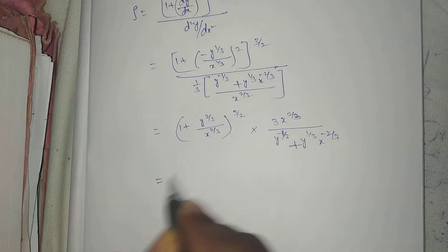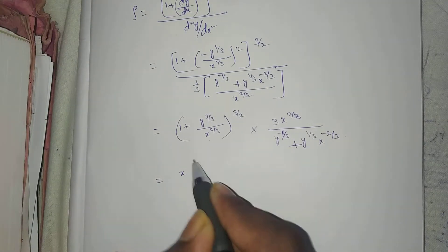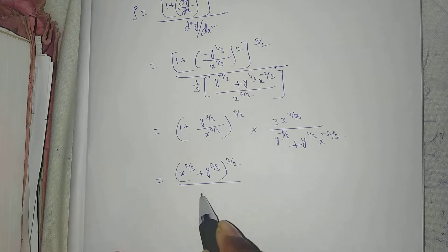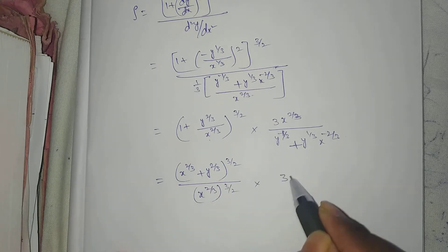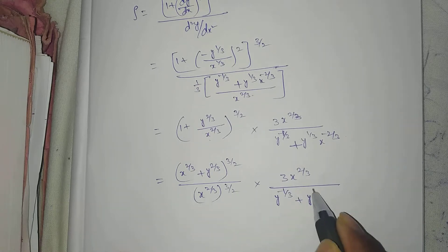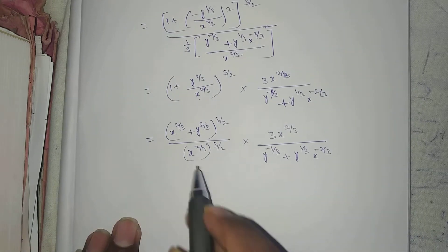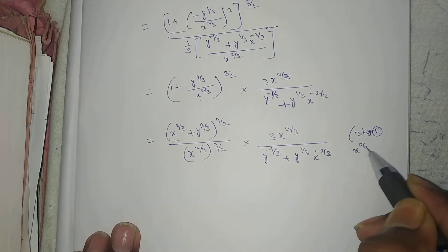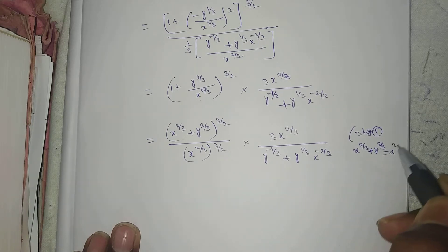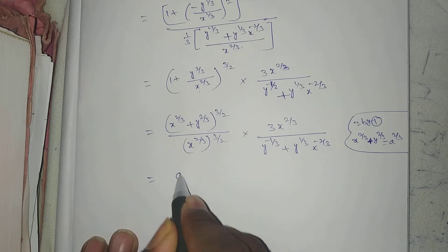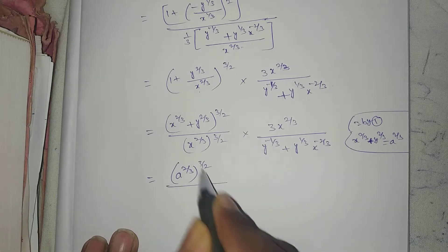Taking LCM in the numerator: [(x^(2/3) + y^(2/3)) / x^(2/3)]^(3/2). Using equation 1, x^(2/3) + y^(2/3) = a^(2/3), so this becomes (a^(2/3))^(3/2) / (x^(2/3))^(3/2) = a / x, multiplied by 3·x^(2/3).